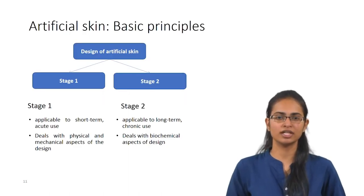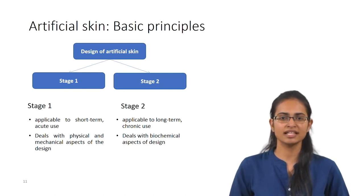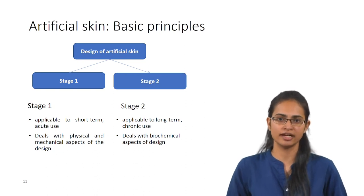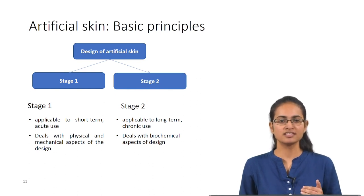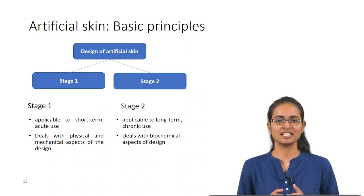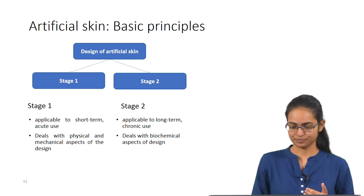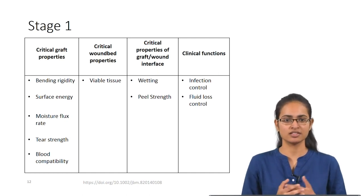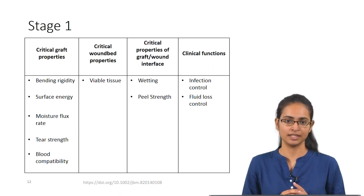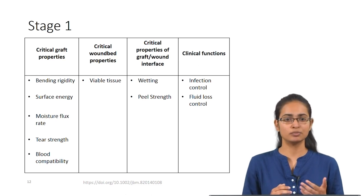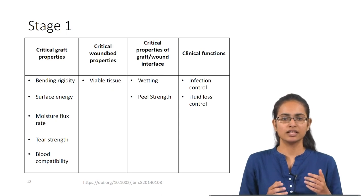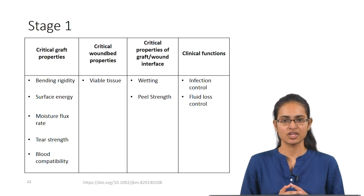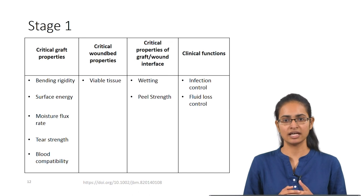Hello everyone, I am Vasudha, an MS student in Dr. Vignesh Muthuvijayan's lab. Today we are going to discuss various design strategies used to synthesize tissue engineered skin grafts. Artificial skin is designed in two stages. Stage 1 is applicable to short-term acute use, while stage 2 is applicable to long-term chronic use. Stage 1 deals with physical and mechanical aspects, while stage 2 deals with biochemical aspects. In stage 1, the major critical graft properties include bending rigidity, surface energy which affects wetting, moisture flux rate through the graft, tear strength and blood compatibility. The critical clinical functions most important at this stage are infection and fluid loss control.